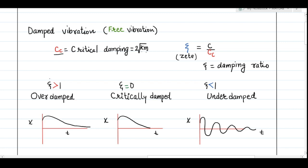When zeta is greater than 1, the vibration is over-damped: if you displace the system, the mass will move back to its original position without oscillating. When zeta equals 1, the critically damped condition, the mass returns to the mean position in the least time compared to over-damped behavior.